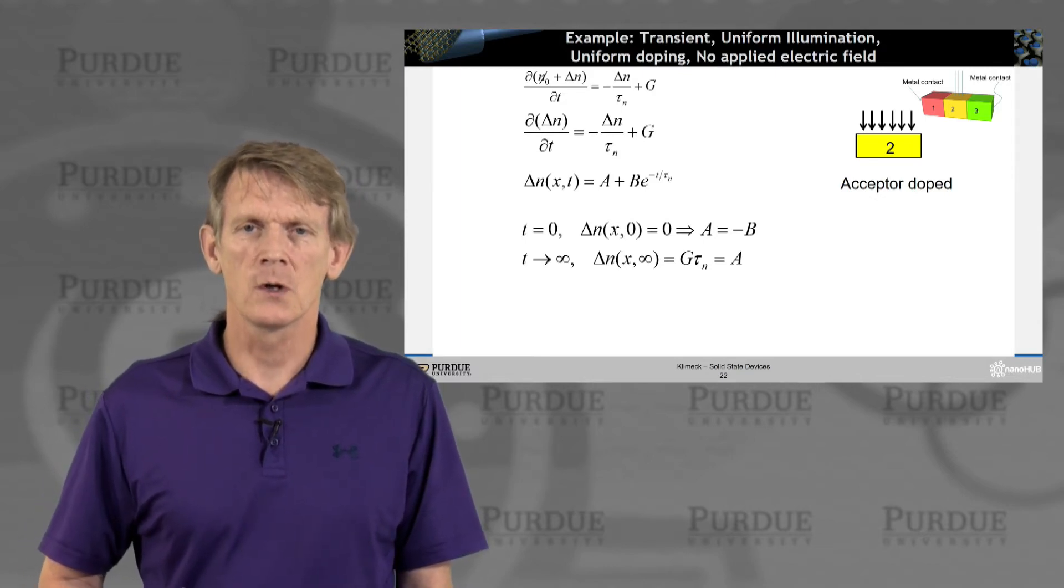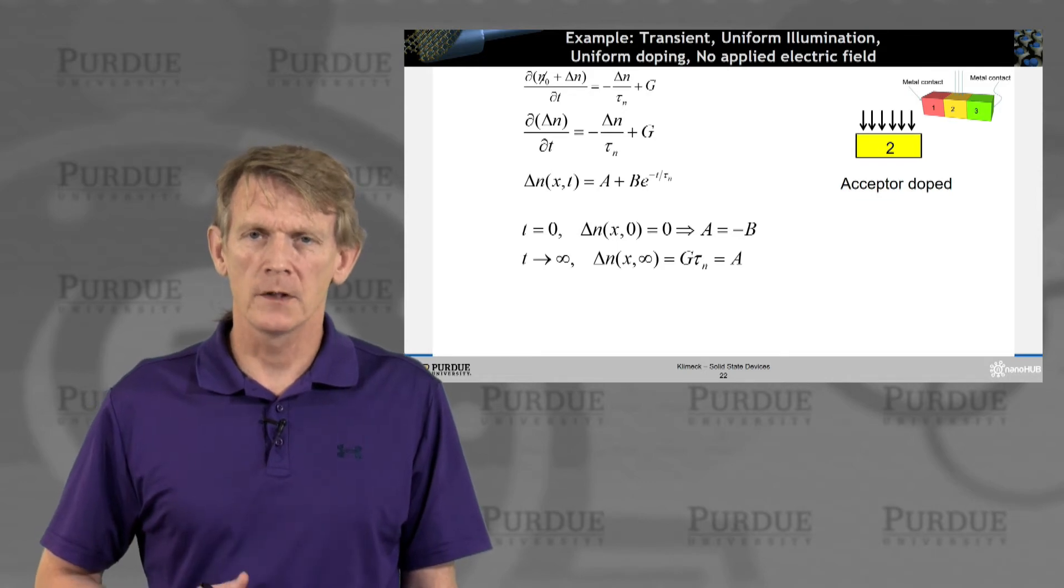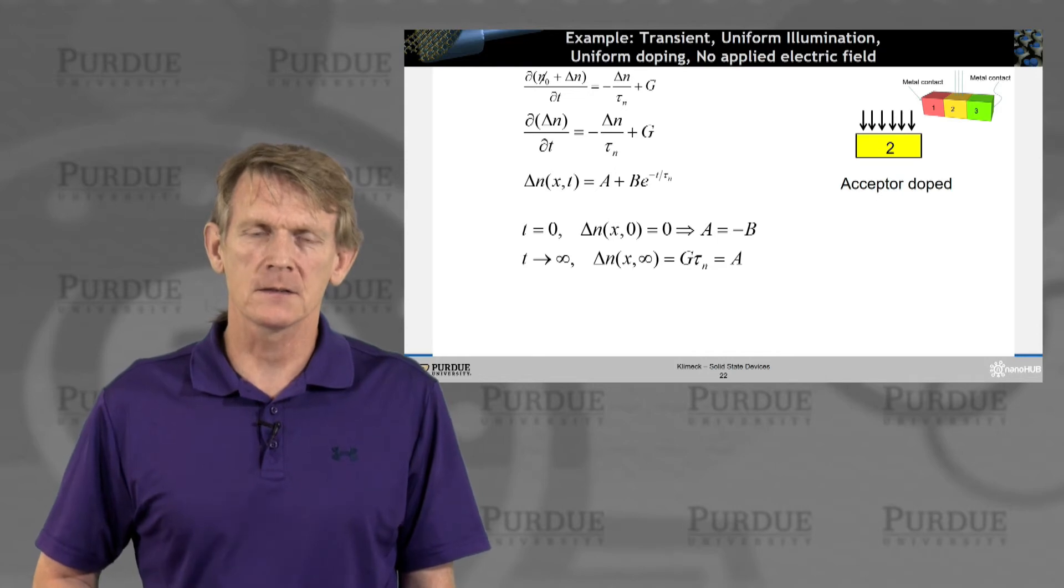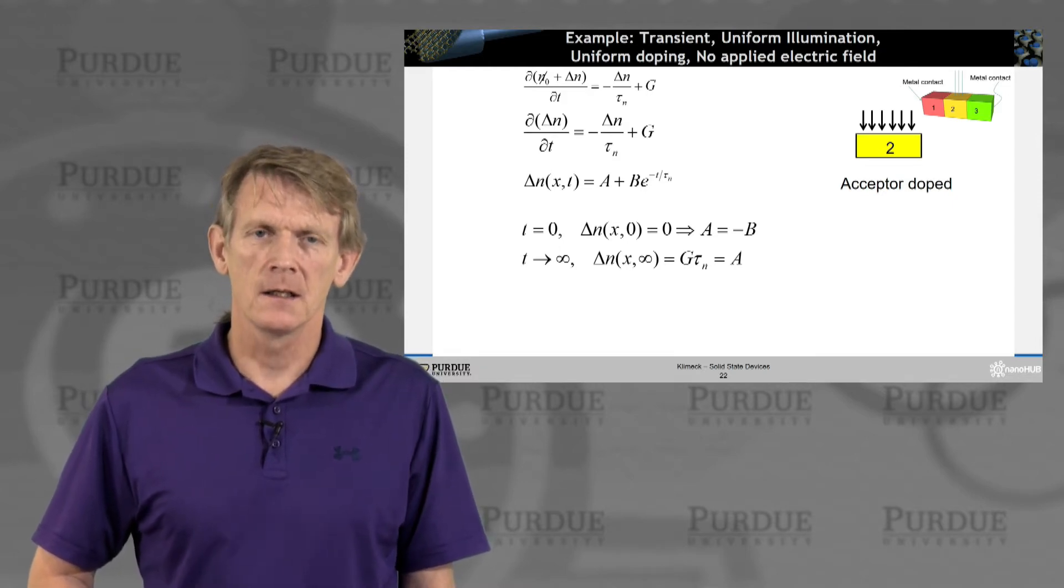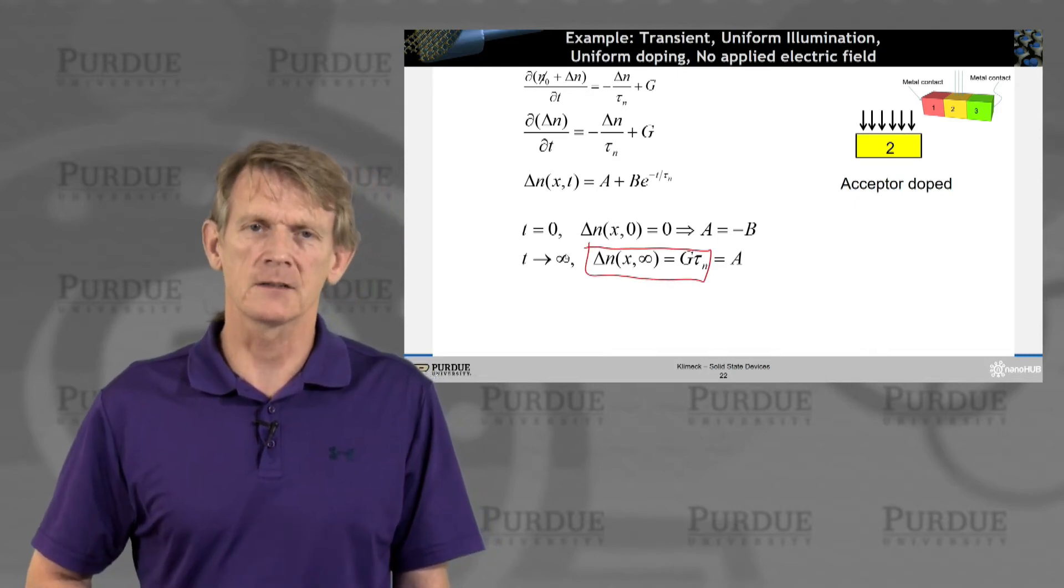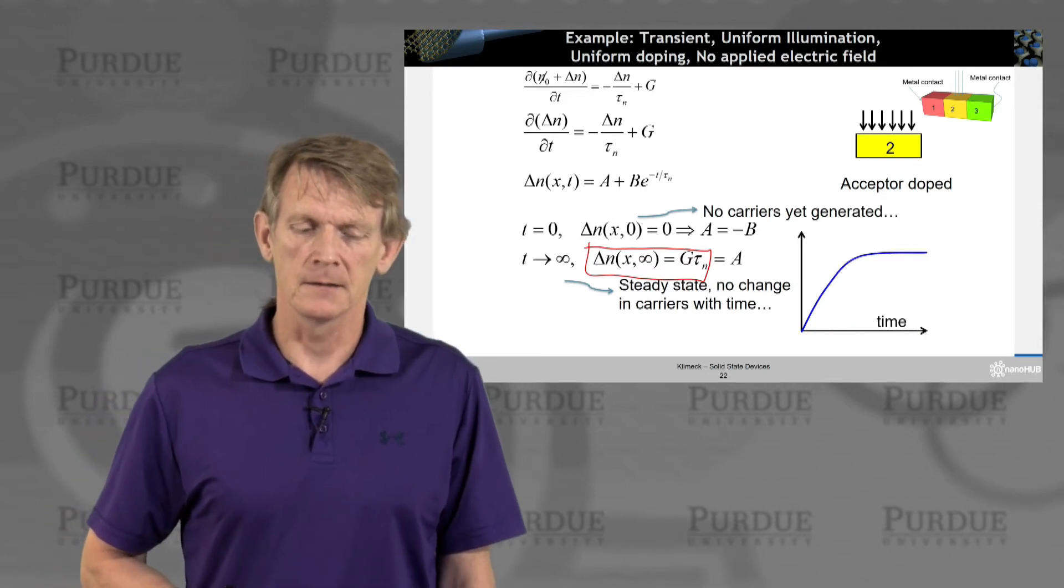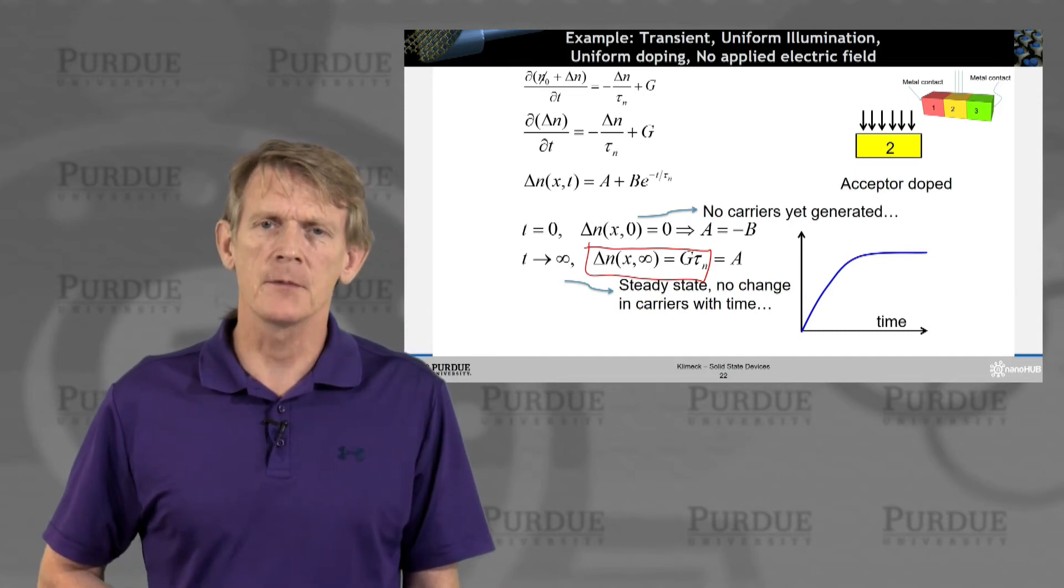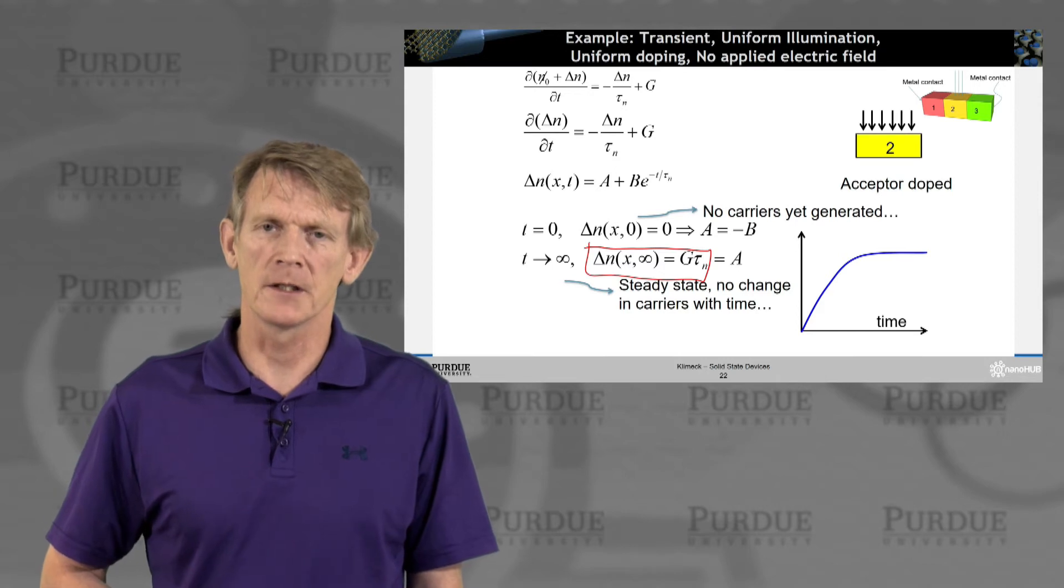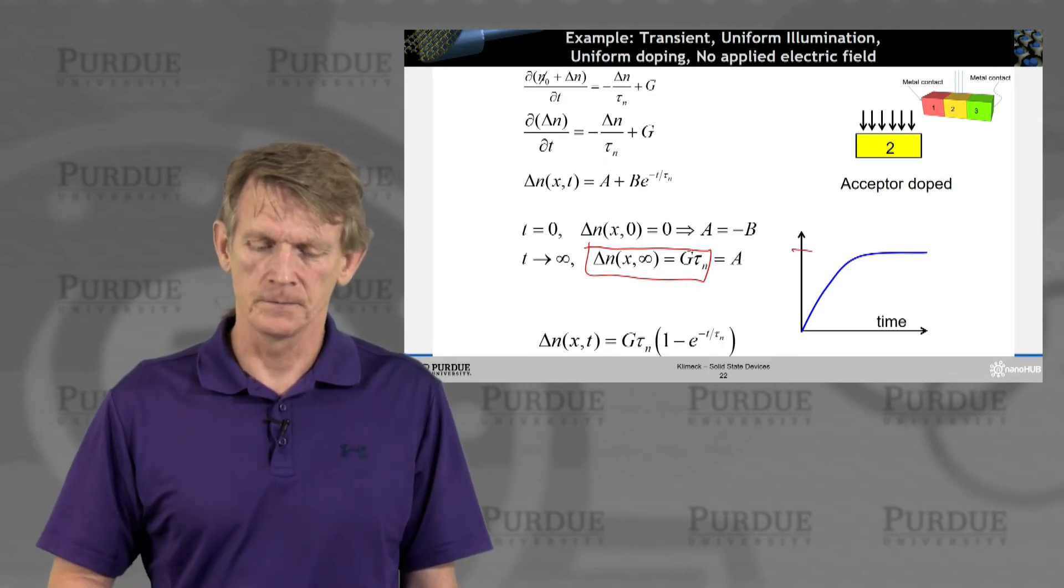The general solution is written down with coefficients a and b. And now we will use boundary conditions to determine these coefficients a and b. So at time equals zero, when the light is not been turned on yet, we know that the excess minority carriers must be zero. So a must be minus b. And at time of infinity, the system must have come to steady state. And therefore, it must be the excess number of carriers must be the generation times the relaxation, because those two are balancing out. So that gives us the coefficient A, which we can then plug back in to have an expression. And we will see a time-dependent behavior of this excess minority carrier concentration. It rises with a rise time of tau, and it reaches a maximum level here as g tau.